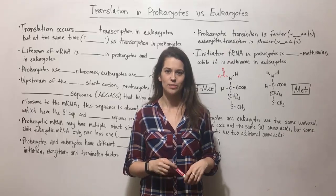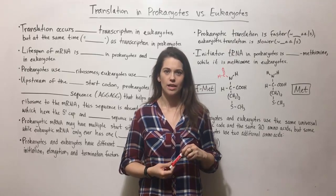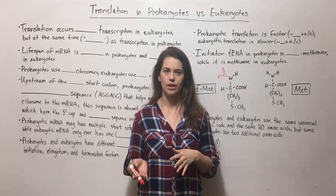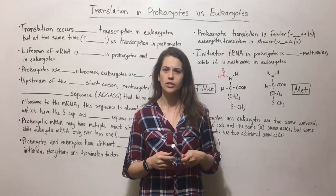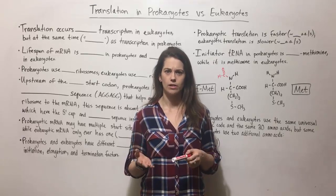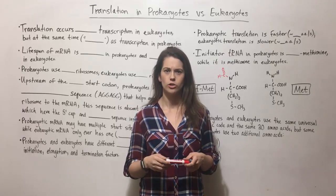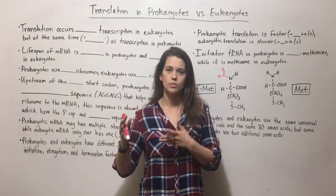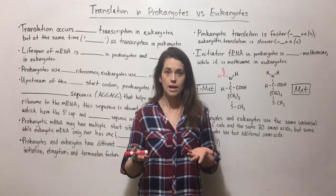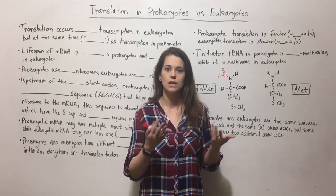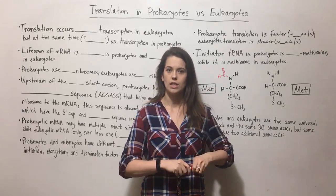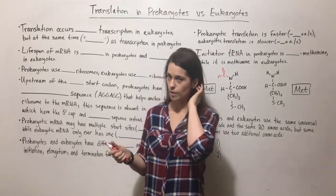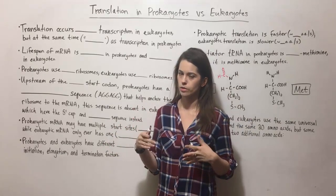Hi everyone and welcome to Biology Professor. Today we're going to be talking about how the process of translation differs in prokaryotes and eukaryotes. Make sure you understand that translation is that final step in gene expression where you have genetic information stored in DNA, and then it is expressed through way of an mRNA intermediate which is used to make protein in the process of translation. So now let's get started.